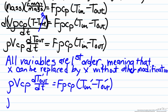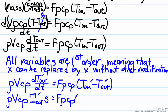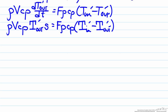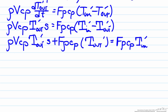Taking the Laplace transform, we get rho·V·Cp multiplied by s·T_out'(s) equals f·rho·Cp multiplied by (T_in'(s) minus T_out'(s)). We can simplify by canceling rho and Cp since they appear in all terms, as they are present in every term on both sides.